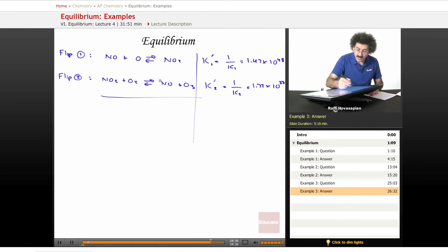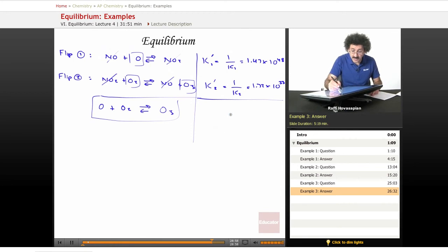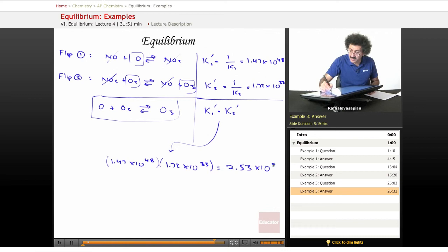Now I add these two equations. NO2 cancels NO2, NO cancels NO. I'm left with O plus O2 goes to O3. This was the equation that we wanted. In order to get the final equilibrium constant, I don't add these, I multiply them. It becomes K1 prime times K2 prime. So it equals 1.47 times 10 to the 48th times 1.72 times 10 to the 33rd. And I end up with getting some huge number, 2.53 times 10 to the 88th. That's huge.